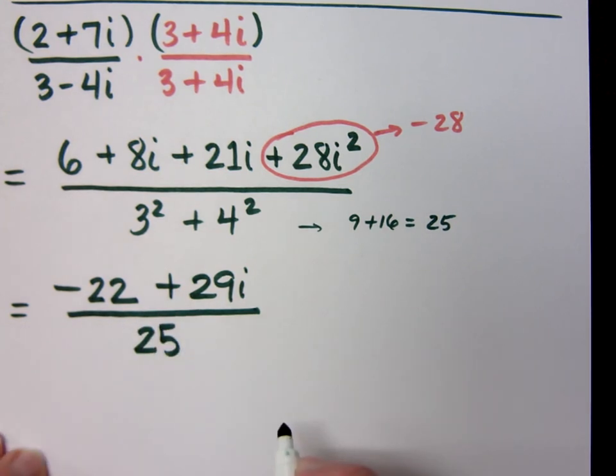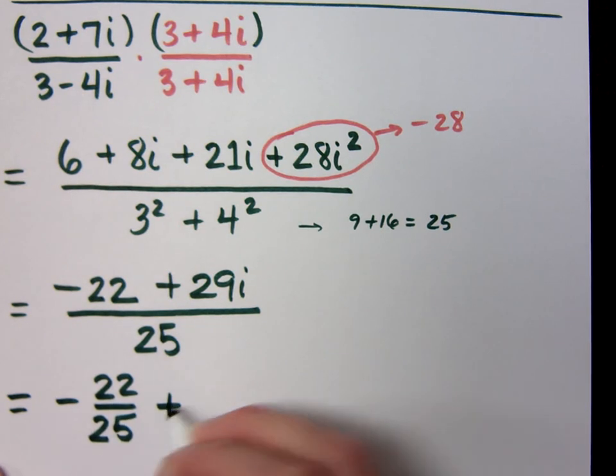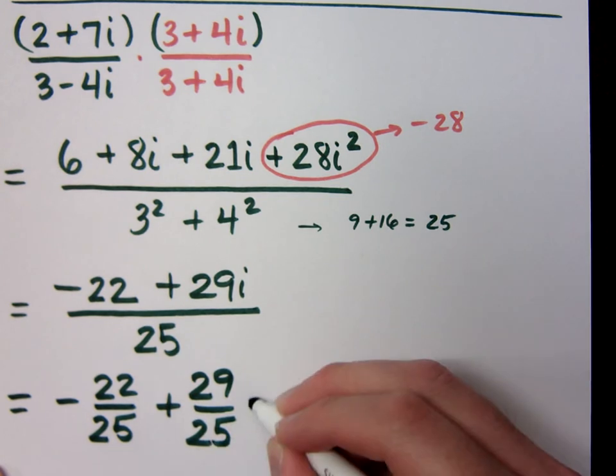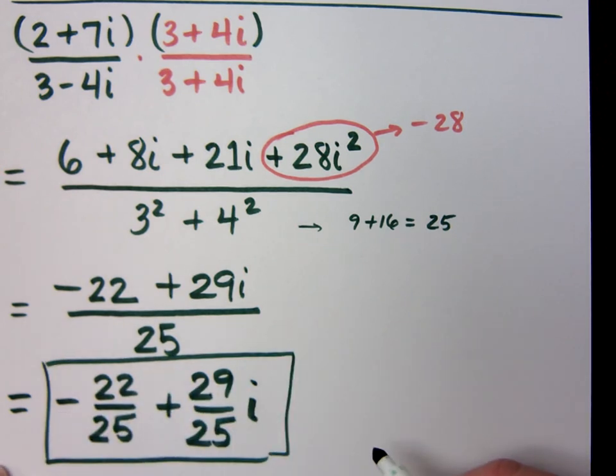Negative 28. Negative 28 and 6. And this is all over 25. But is that good enough for my answer? No. You want to separate this and say what? Negative 22 over 25. Negative 22 over 25 is my real part. Plus 29 25th i. Plus 29 25th i. Do you all agree? Yes. Yeah. You don't agree. I do. Go back and watch the video again and you will agree. I will force you to agree.